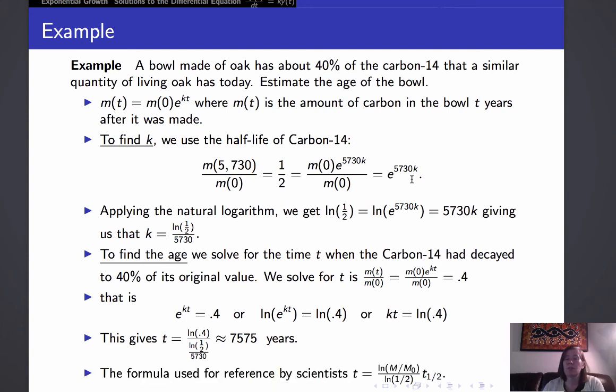Scientists obviously don't reinvent the wheel every time they use this. The formula they use for reference is t equals the natural log of the current mass divided by m0, divided by the natural log of 1 half, times the half-life of carbon-14, which is exactly what we derived from first principles.